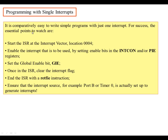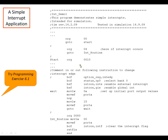Here's a quick piece of information to help you get started with a single interrupt. Start the interrupt service routine at interrupt vector location 4 in your code using the ORG directive. Enable the interrupt by setting the INTCON register and/or the PIE registers, and set the global enable bit. Once in the interrupt service routine, clear the interrupt flag and end the routine with the return-from-interrupt instruction. Ensure that the interrupt source — for example, port B or timer — is actually set up to generate interrupts. Here's an example of how to do an interrupt.